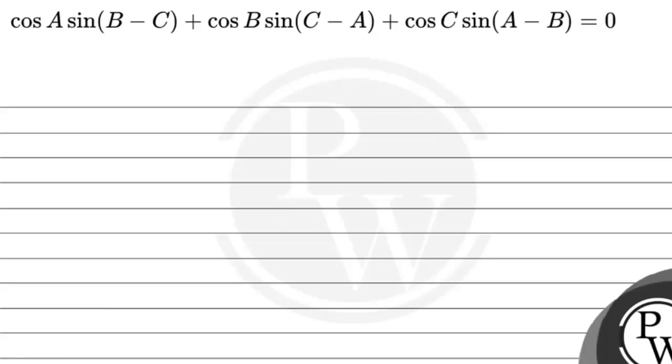Hello students, let's see the question. The question says that cos A sin(B - C) + cos B sin(C - A) + cos C sin(A - B) is equal to zero. So you have to prove that the addition of these trigonometry functions is equal to zero. Okay, so let's start the solution.